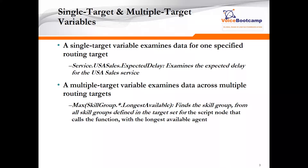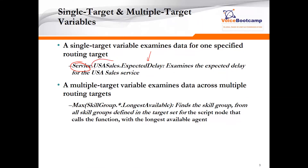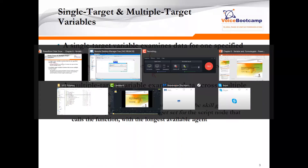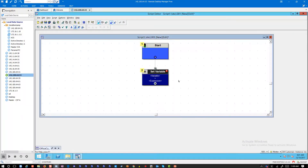In a variable, you can get or examine data for one specific routing target. Here is an example: the service is called US Sales, followed by Expected Delay. This is the actual service name and this is the variable within that service — Expected Delay. You can also collect information for multiple routing targets.